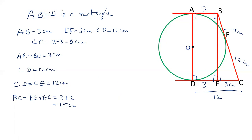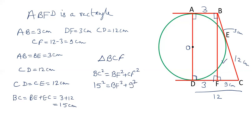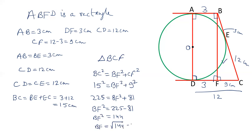Now let's take triangle BCF. This is a right angle triangle, and therefore BC squared equals BF squared plus CF squared. BC is 15, so BC squared is 225. CF is 9 cm, so CF squared is 81. Therefore BF squared equals 225 minus 81, which is 144. This gives us the length of BF as the square root of 144, that is 12 cm.